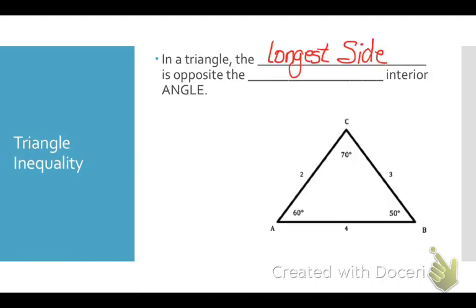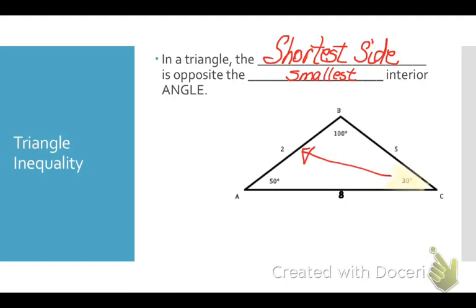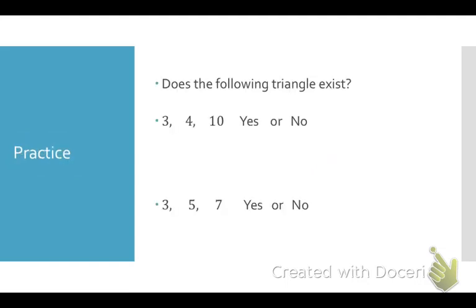Here's another thing you need to know. In a triangle, the longest side is always opposite the largest interior angle. In our diagram, 70 degrees is our largest interior angle and it is opposite our longest side. I need you to memorize that. The smallest interior angle, 30 degrees, is opposite the shortest side. Memorize that as well.